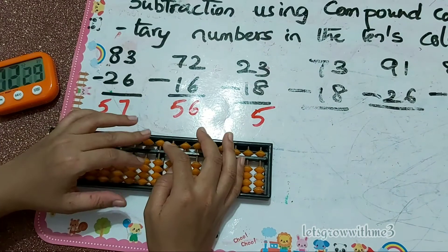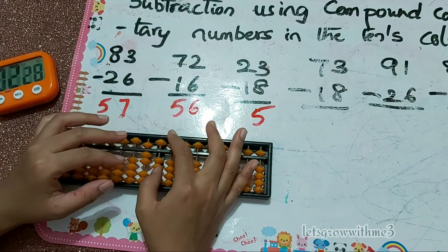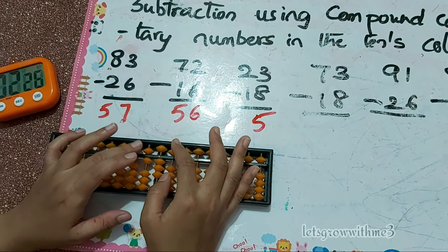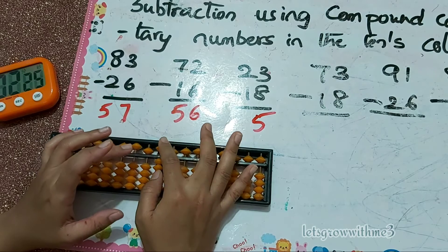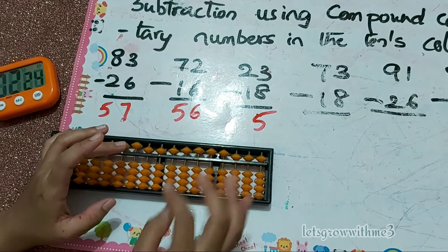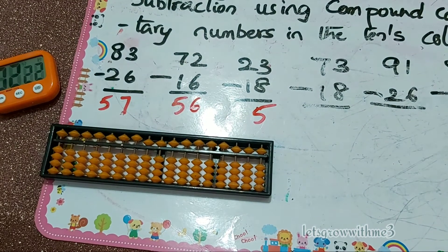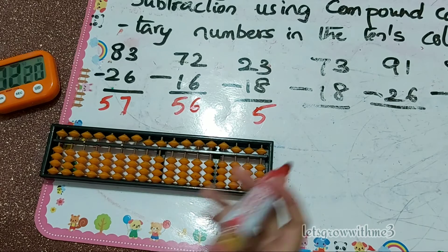Next: 73 minus 18. Minus 1 in the tens column, minus 8 in the ones column. Papa down, mama down, baby down. So the answer is 55.